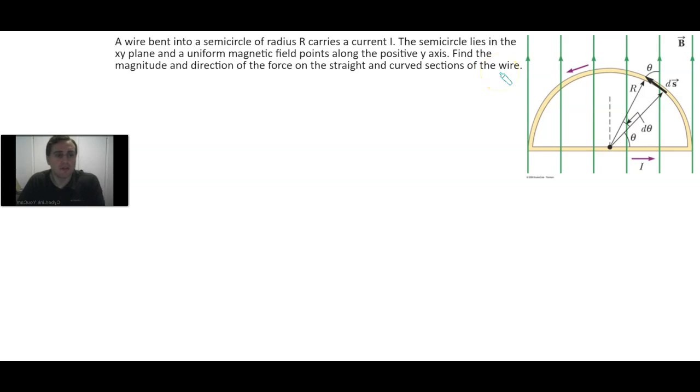Let's first start with the straight section of wire. For the straight section we can just use the standard equation for the magnetic force on a straight current carrying wire. That should be the equation I times L times B times the sine of phi and phi is the smallest angle between the L vector and the B vector.